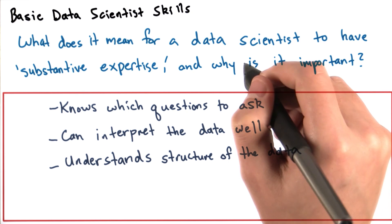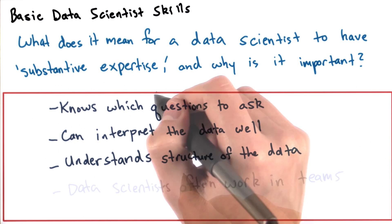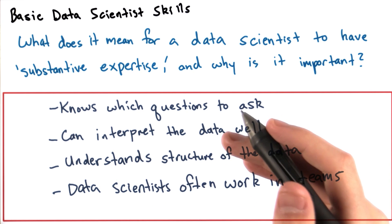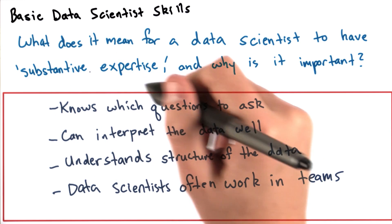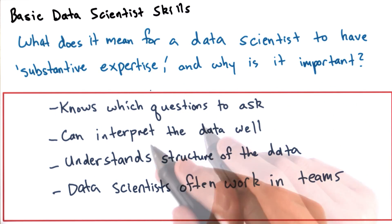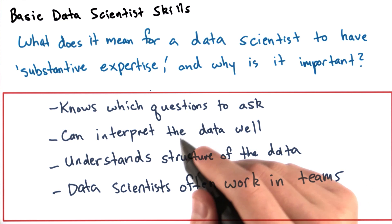This is why it's important for a data scientist to have substantive expertise. It's important to note that data scientists usually work in teams, so it's normal for data scientists to be stronger in some areas and weaker in others. So even if you as a data scientist don't have tons of substantive expertise, if you have great hacking skills or know a lot of statistics, you can still be a valuable member of a data science team.